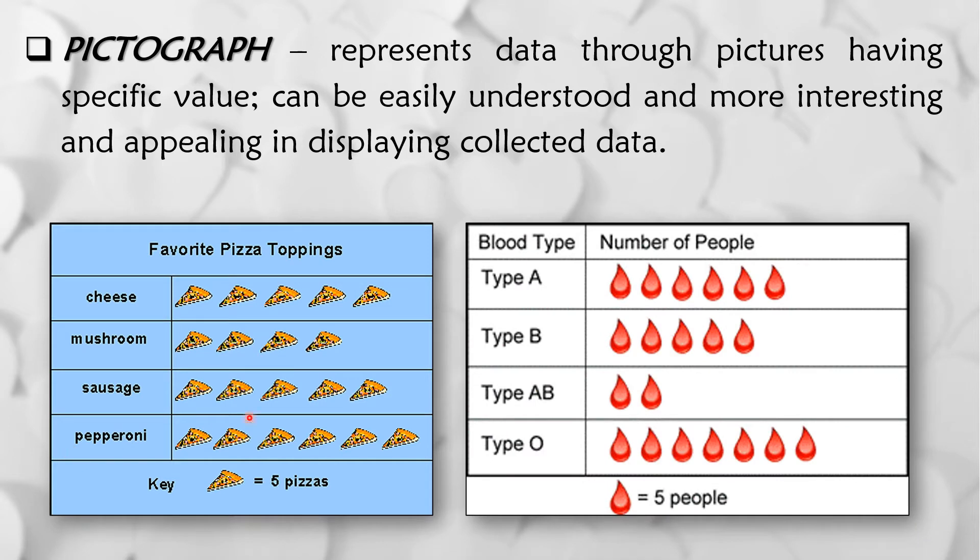So another is this one. The blood type and the number of people na kung saan ang isang patak ng dugo ay katumbas ng 5 tao. So ang may blood type A daw ay 2, 4, 6. So 6 times 5 is 30 people or 30 persons. And then ang may type AB naman ay 2 lamang. So 2 times 5 is 10. So kung mapapasin nyo, gumamit ng mga pictures para i-represent ang data. So ito ay mga halimbawa ng pictograph.